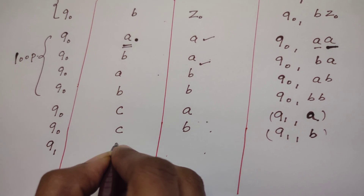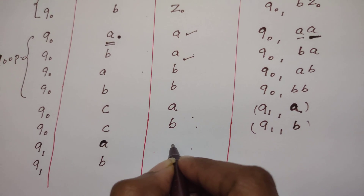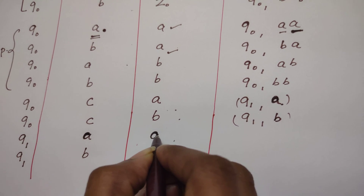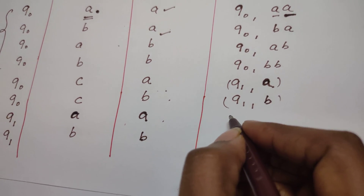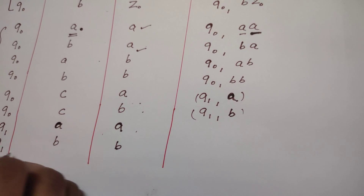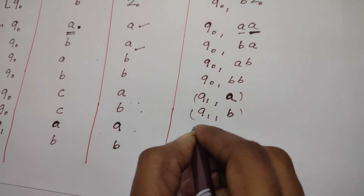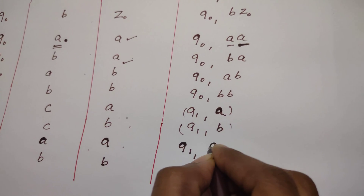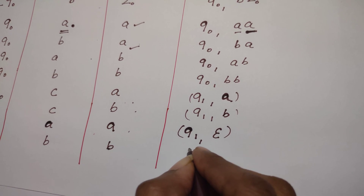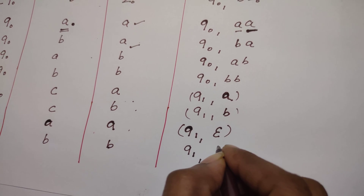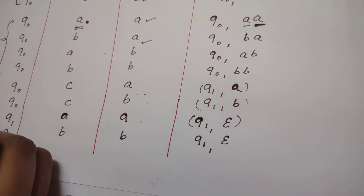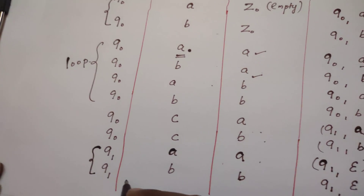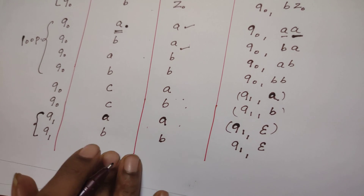From Q1, the PDA reads the second half of the string, expecting either A or B. When it reads A, A must be at the top of the stack; when it reads B, B must be at the top of the stack. If these configurations hold, the PDA stays in Q1 and pops whatever is at the top of the stack — B is replaced by epsilon, A is replaced by epsilon. These two rules execute continuously for all characters in the second half.